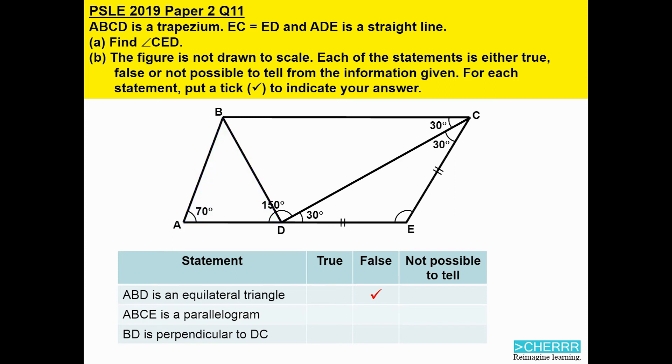The second statement: ABCE is a parallelogram. In order for this figure to be a parallelogram, one of the properties is that opposite angles must be equal. We take a look at this pair of opposite angles. One of them is 70 degrees; the opposite side is only 60 degrees. We can therefore conclude that ABCE is not a parallelogram.